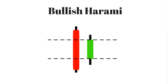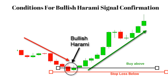Bullish harami: this pattern consists of a large bearish candlestick followed by a small bullish candle that is completely inside the range of the bearish candle. It's also called the mother-baby pattern — the bearish candlestick is the mother and the bullish candlestick is the baby. Conditions for bullish harami signal confirmation — first condition: it should be formed after a downtrend.